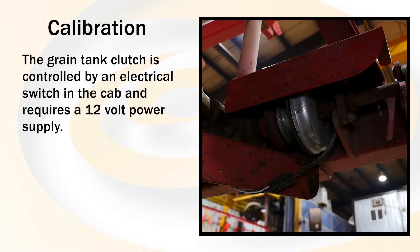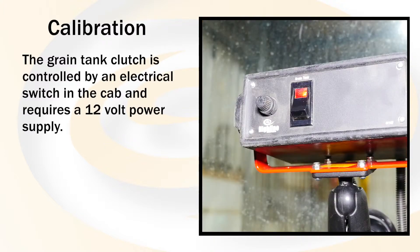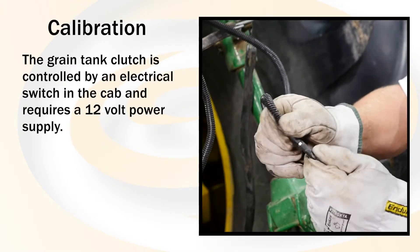The grain tank clutch is controlled by an electrical switch in the cab. This requires 12 volt power supply.